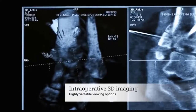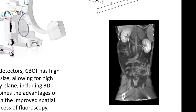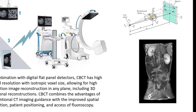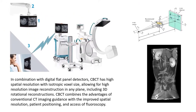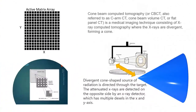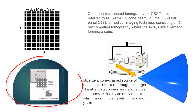In combination with digital flat panel detectors, cone beam CT has high spatial resolution with isotropic voxel size. This allows for high resolution image reconstruction in any plane, including 3D rotational reconstruction. Cone beam CT is known by many names and can be somewhat confusing, as the names are being interchanged — it is also referred to as C-arm CT, cone beam volume CT, or flat panel CT.